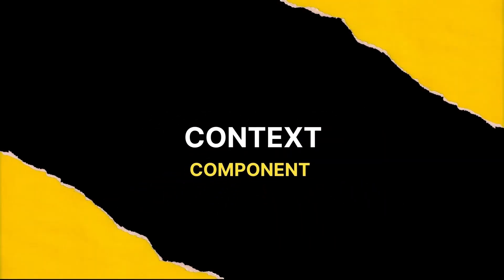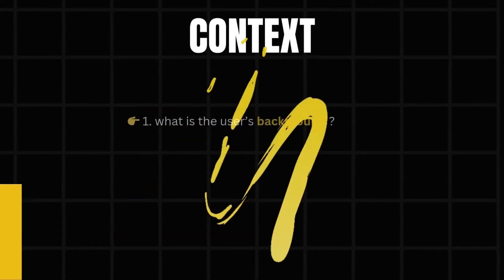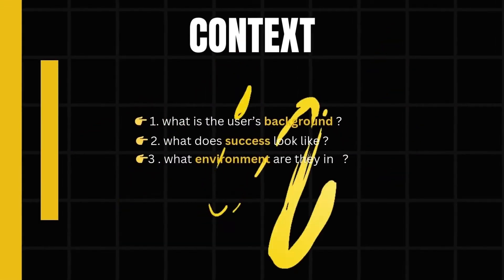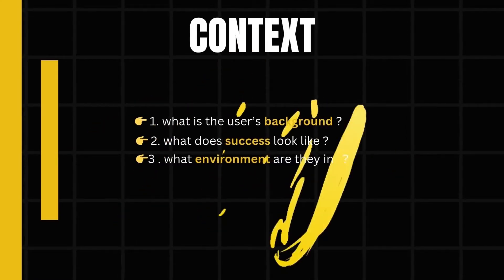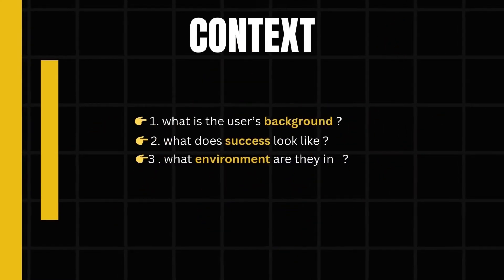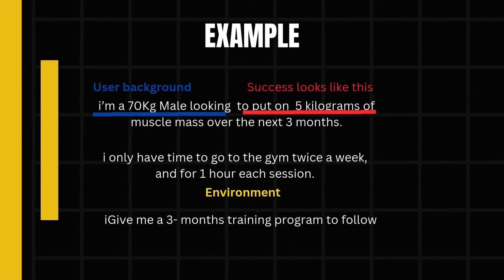The second component is context. Context can be tricky to get right because there is technically an endless amount of information you could provide. I found that asking myself three questions helps determine the right amount of relevant information: What is the user background? What does success look like? And what environment are they in?